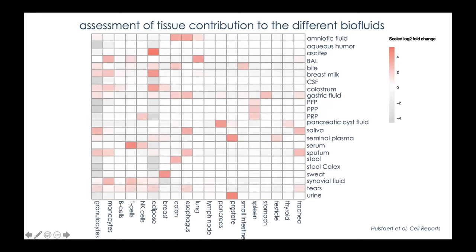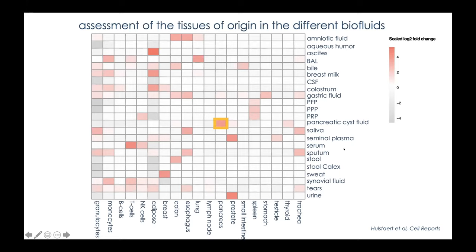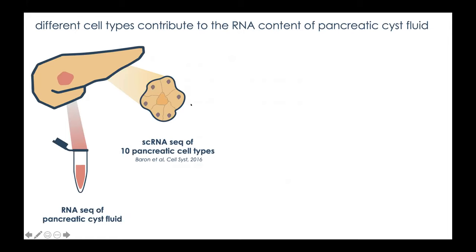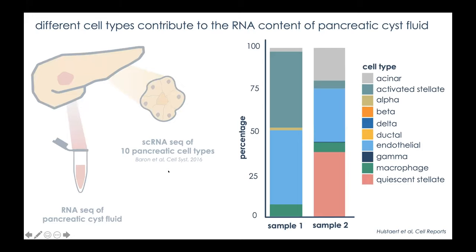This allows us to put together a map of fold changes to understand whether tissue contribution to different fluids makes sense — and it appeared to do so. Prostate mainly contributes to urine and seminal plasma; stomach mainly contributes to gastric fluid; pancreas mainly contributes to pancreatic cyst fluid. Pancreatic cyst fluid is a nice example where it's easier to define contributing cell types, so we applied computational deconvolution there using single-cell RNA sequencing data from pancreas to establish fractional contributions of each pancreatic cell type.